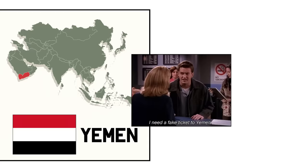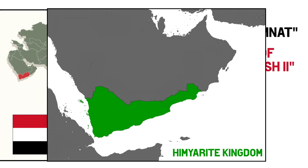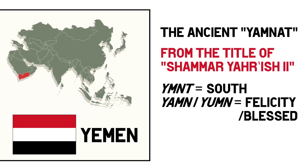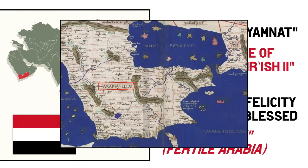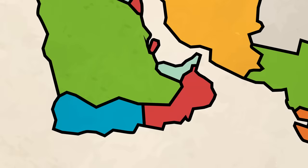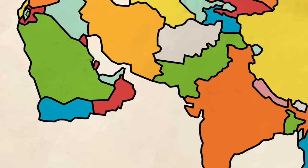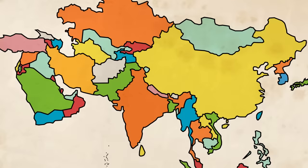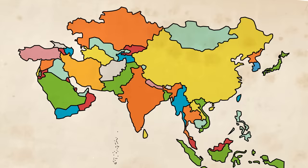And finally, Yemen. Yemen might come from the ancient Yamnat, which was in the title of one of the kings of the second Himyarite kingdom. The term probably referred to the southwest coastline of the Arabian Peninsula. Although Yemen could also derive from Yimt meaning south, or from Yamn or Yumn meaning felicity or blessed, as much of the country is fertile. In ancient times the Romans even called it Arabia Felix — fertile Arabia. And so those are the name origins of each Asian country — what they mean, how they came to be used, and how they have sometimes changed throughout history, as well as the differences between the way we internationally refer to the country, usually in English, and the way the countries refer to themselves in their own languages. Thanks so much for watching, subscribe if you want, and I will see you next time for more general knowledge.